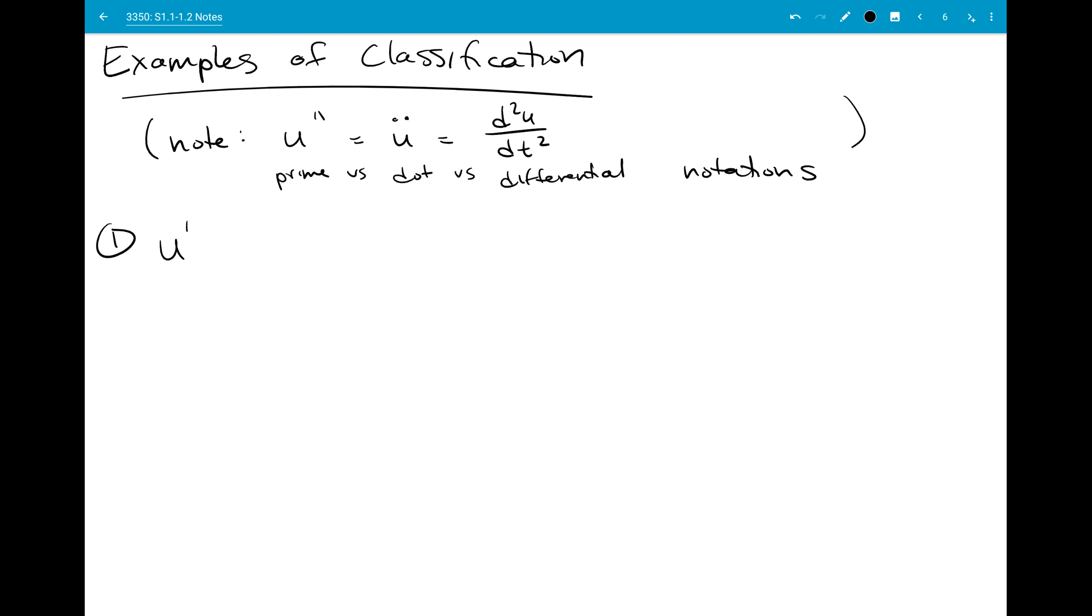So if we have the differential equation u triple prime minus u prime equal to zero, this is going to be a third order equation. So I looked and I saw what's the highest order derivative. It's this one, a third order derivative. So this must be a third order equation.